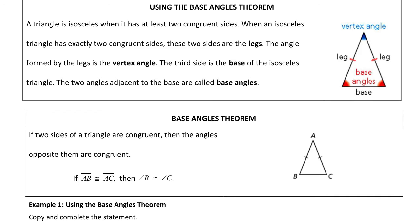The angle formed by those legs is called the vertex angle. And then the third side is the base, meaning the two angles by the base are the base angles.